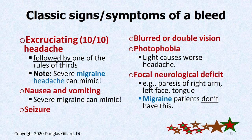Classic symptoms of a bleed are very similar to a migraine headache with a couple of exceptions: horrible 10/10 headache, severe worst pain you can imagine, nausea and vomiting, blurred or double vision, and photophobia. That could all be migraine. But if you go into a seizure, that's most likely not a migraine. And if you have any type of neurological deficit, that's not a migraine either.